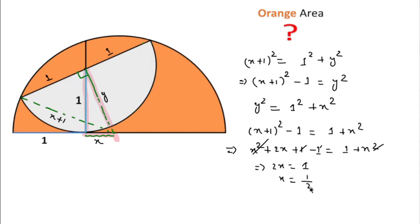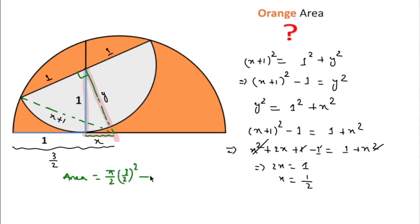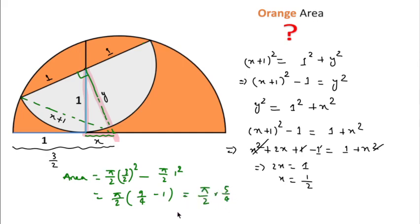Therefore x = 1/2, which means the radius of the bigger semicircle is 3/2. The orange shaded area equals the bigger semicircle area minus the smaller semicircle area: (π/2)(3/2)² - (π/2)(1²) = (π/2)(9/4 - 1) = (π/2)(5/4) = 5π/8. This is the required answer. Thanks for watching — please like, share, and subscribe to this channel.